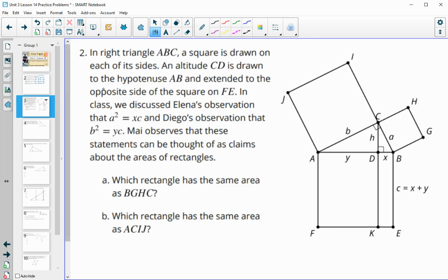Number two, in right triangle ABC, a square is drawn on each of its sides, and altitude CD is drawn to the hypotenuse AB from this right triangle and extended to the opposite side of the square. In class, we discussed Elena's observation that A squared equals X times C, and Diego's observation that B squared equals Y times C. Mai observes that these statements can be thought of as claims about the area of the rectangles.